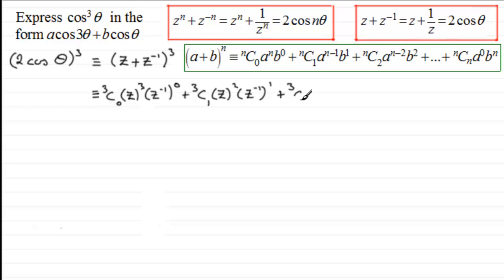Next term will be ³C₂. Reduce the power on this z, so z¹ now and increase the power on z⁻¹. So z⁻¹ goes up now to the power 2 and then you get your final term plus ³C₃ and then this term's power decreases by 1, so z⁰, and this one goes up by 1, so (z⁻¹)³.